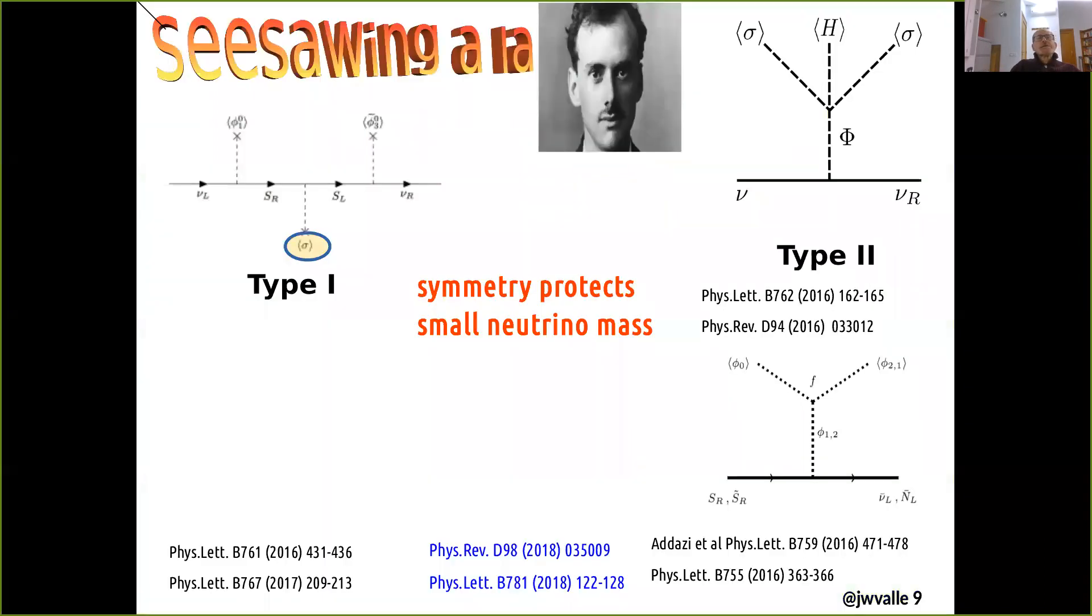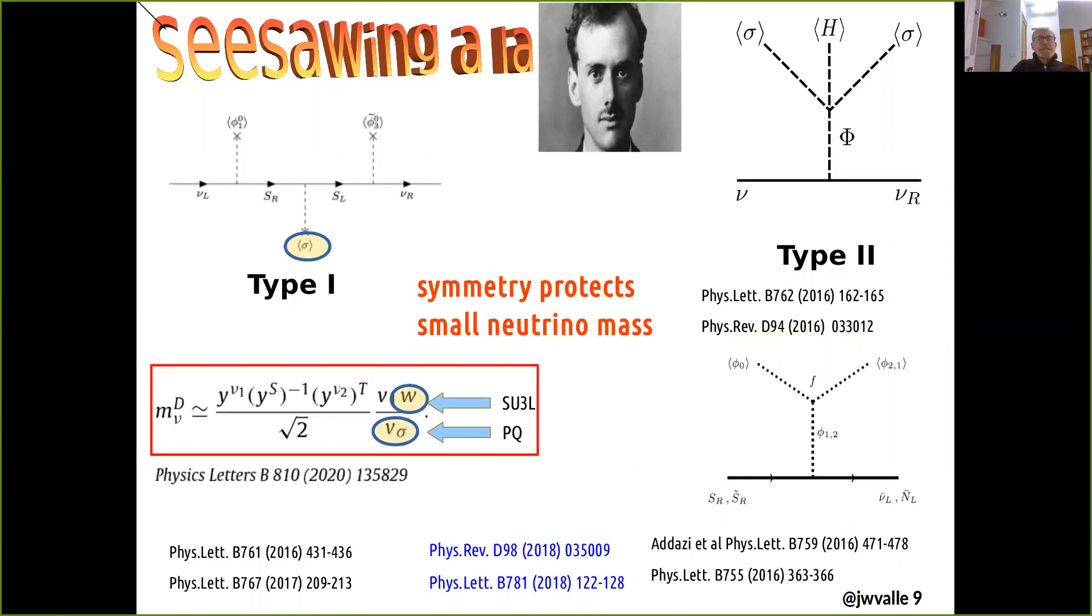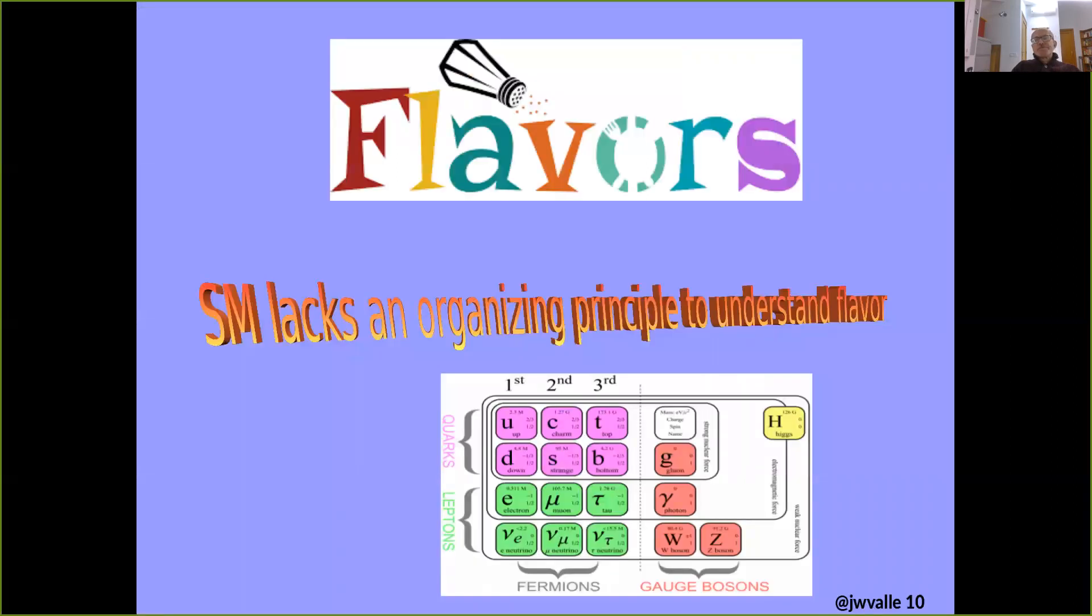So much for Majorana. Now I turn to Dirac neutrinos. You can also seesaw a la Dirac. You have the same thing, Type I and Type II operators. They have been completely classified, and the most important statement is that again here symmetry protects the small neutrino masses. And in fact, the symmetry can be a very high pedigree symmetry such as the Peccei-Quinn symmetry associated to the solution to the strong CP problem, deeply connected with the generation of small Dirac neutrino masses.